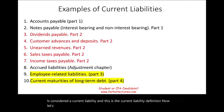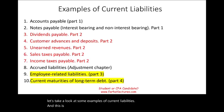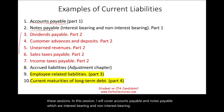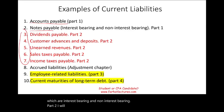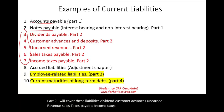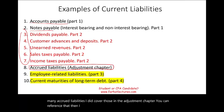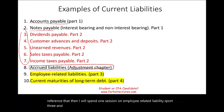Let's look at some examples of current liabilities. There are 10 types we'll cover across these sessions. In part one, I'll cover accounts payable and notes payable — both interest-bearing and non-interest-bearing. Part two covers dividends, customer advances, unearned revenue, sales taxes payable, income taxes payable, and accrued liabilities. Part three covers employee-related liabilities, and part four covers current portions of long-term debt.